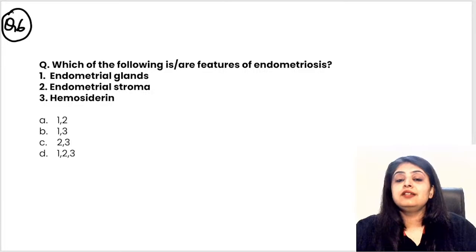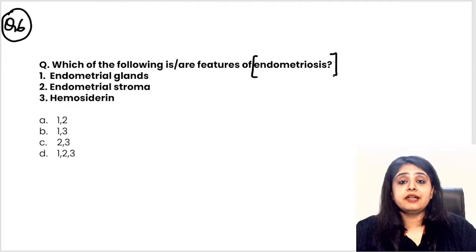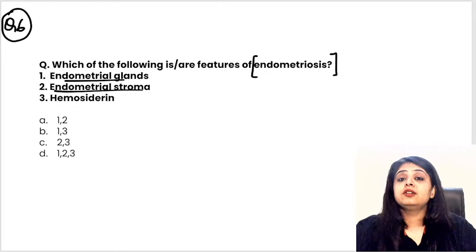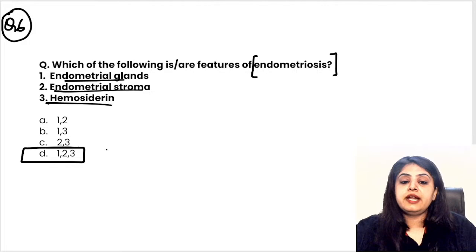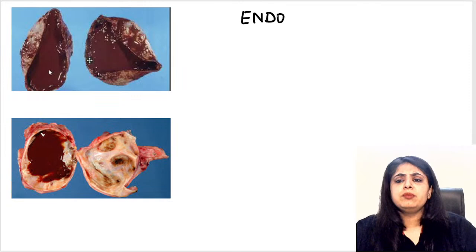Question six: which are features of endometriosis? Many students say endometrial glands and stroma, but the twist is these endometrial glands and stroma will bleed, resulting in hemosiderin formation also. So the correct diagnosis of endometriosis requires all three: endometrial glands, endometrial stroma, and hemosiderin.